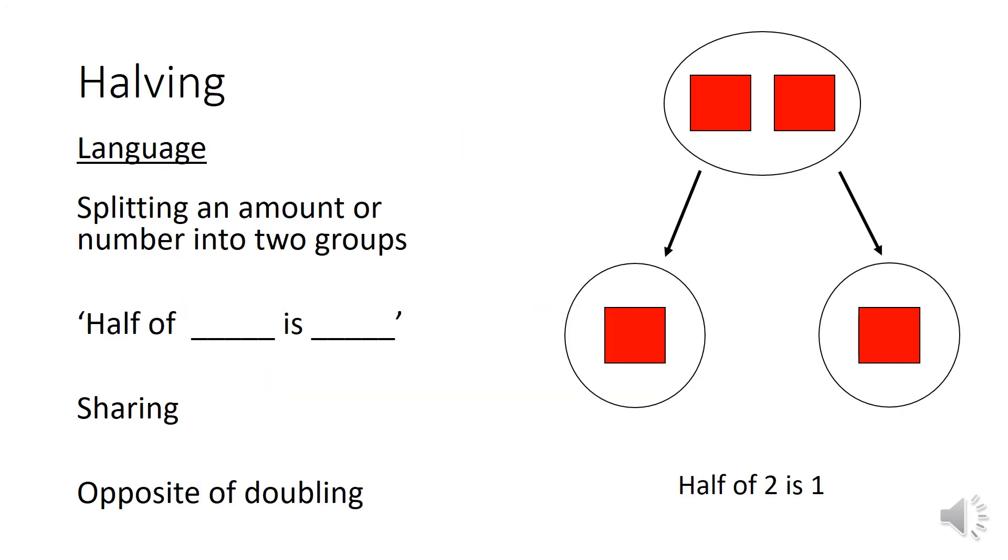So just a quick recap of our vocabulary and language that we should be using. Halving is splitting or dividing an amount or number into two groups just like my diagram over here. So we say the sentence half of two is one. It's also known as sharing equally and it's the opposite of doubling.